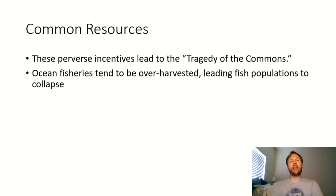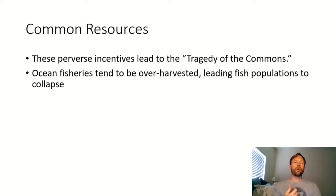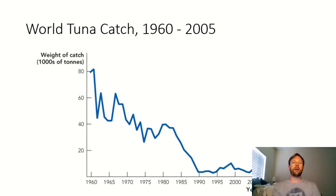When you have a common resource, it commonly leads to what's called a tragedy of the commons — a situation where people are consuming too much of this resource at an unsustainable rate. For example, ocean fisheries tend to be overharvested so that fish populations will tend to collapse.